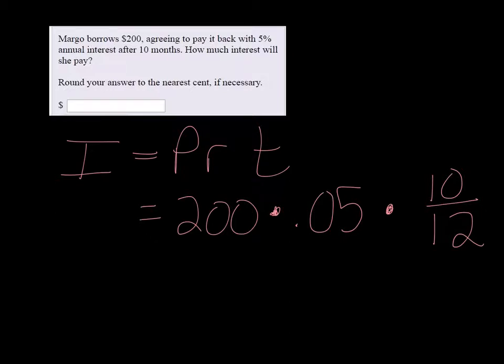And then in a calculator, you can multiply that out: 200 times 0.05 times 10 over 12.